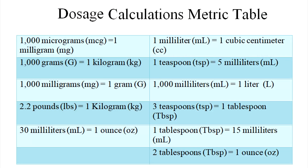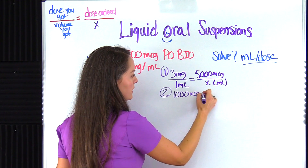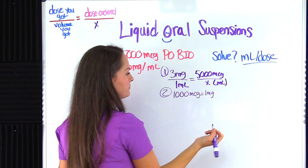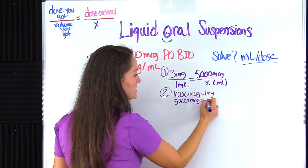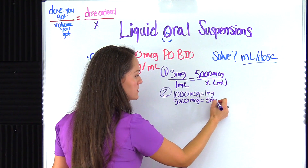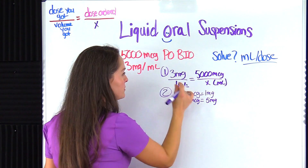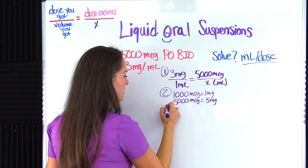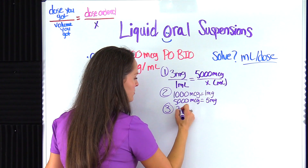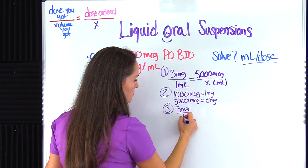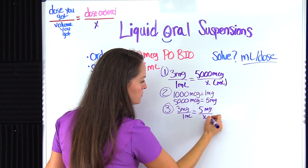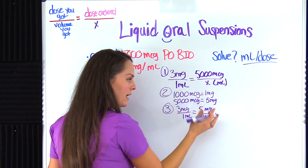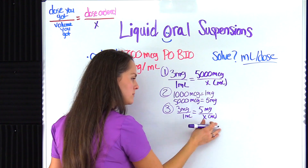From the metric table we know that 1,000 micrograms equals one milligram. So if we have 5,000 micrograms, that gives us five milligrams. I'll plug that new number in, so the equation becomes: three milligrams over one milliliter equals five milligrams over x — where x is the milliliters we're solving for. Now the units match on both sides, so we're good to go.